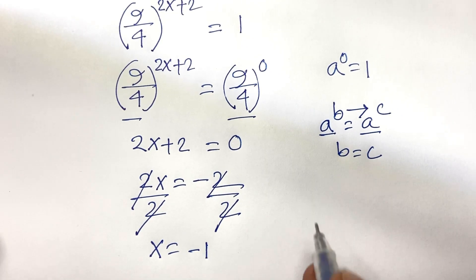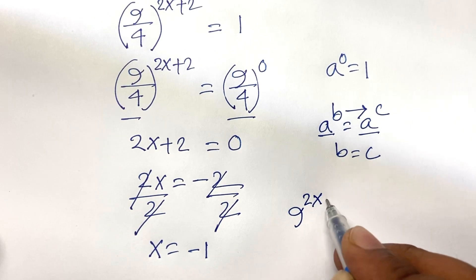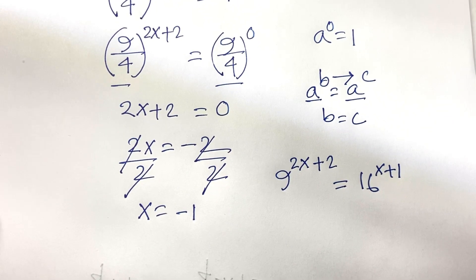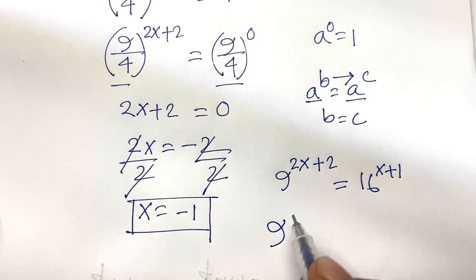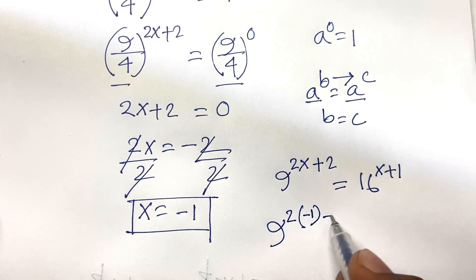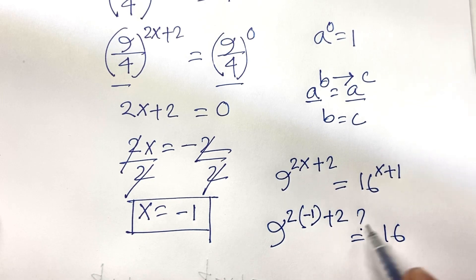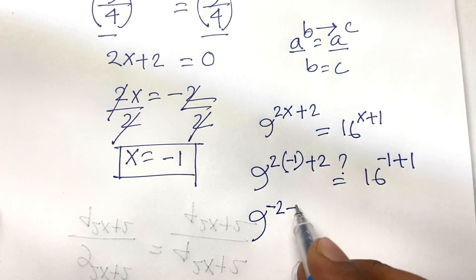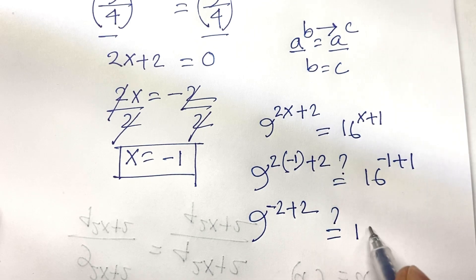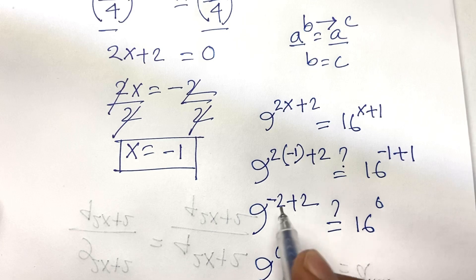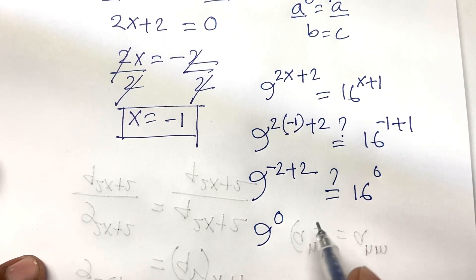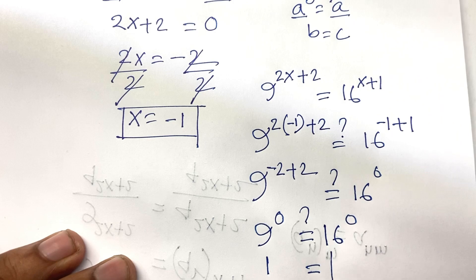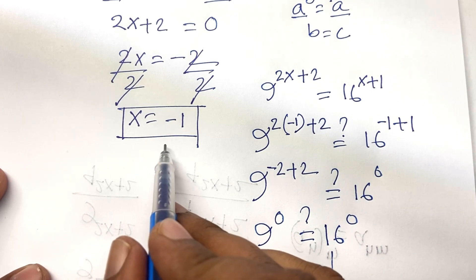Now let's verify: our original equation is 9 to the power of 2x plus 2 equals 16 to the power of x plus 1. Substituting x equals minus 1: 9 to the power of 2 times minus 1 plus 2 equals 16 to the power of minus 1 plus 1. That gives 9 to the power of 0 equals 16 to the power of 0. We know 9 to the power 0 equals 1 and 16 to the power 0 equals 1, so x equals minus 1 is confirmed as the correct answer.